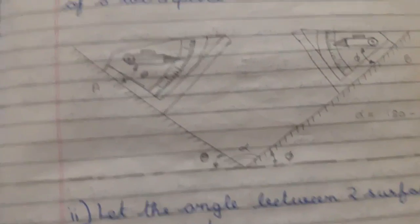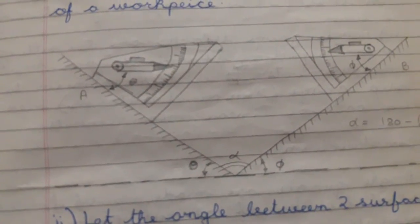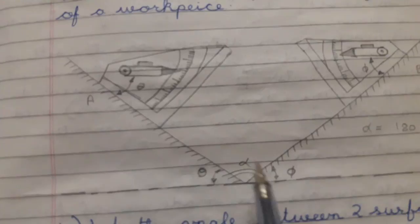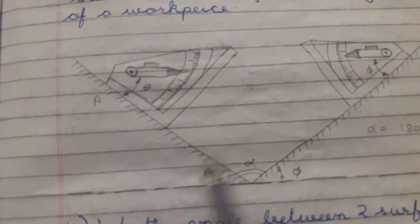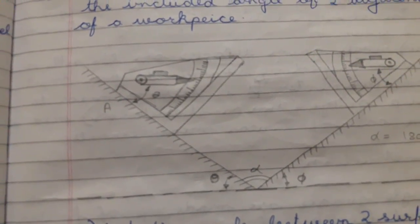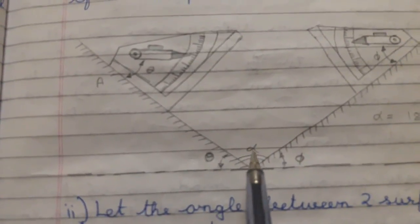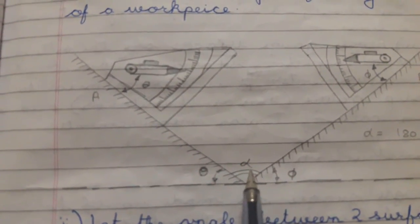Regarding the working or the use of Clinometer. Clinometer is used to determine the included angle of the two adjacent faces of a workpiece. Let the angle between the two surfaces to be measured.